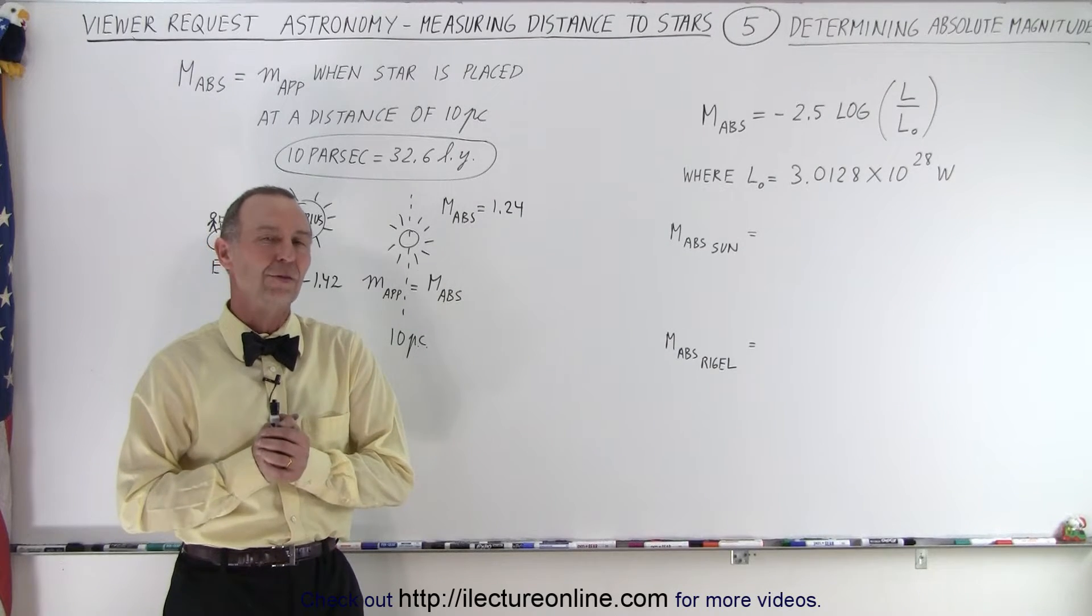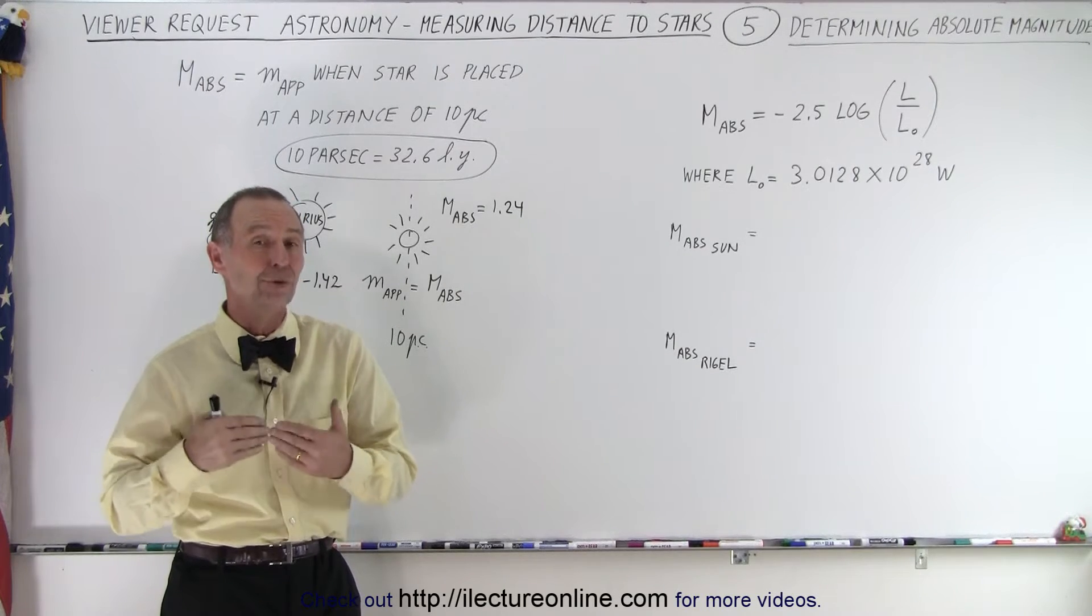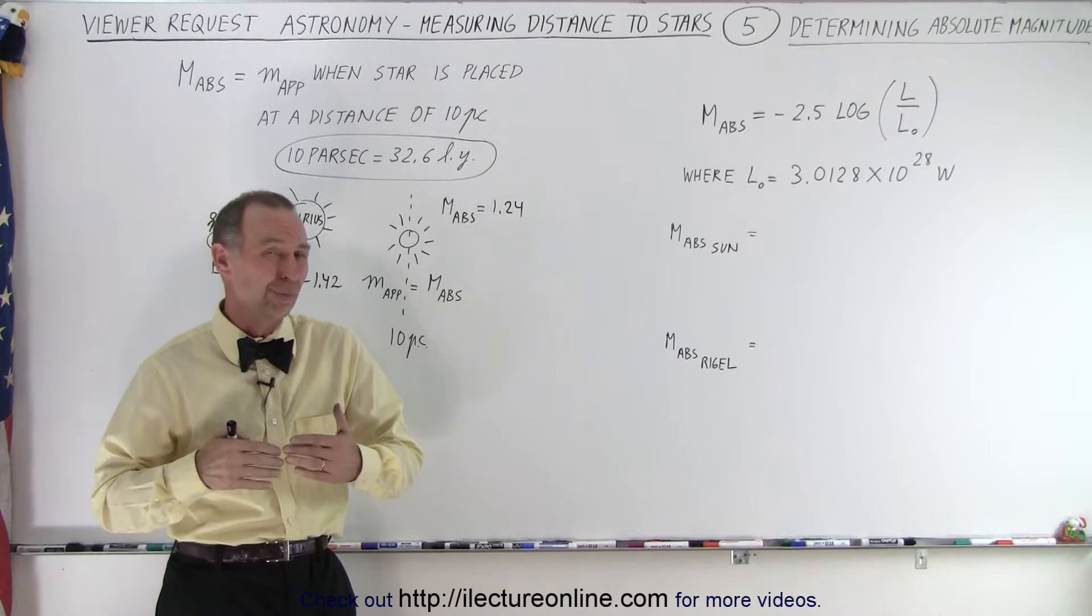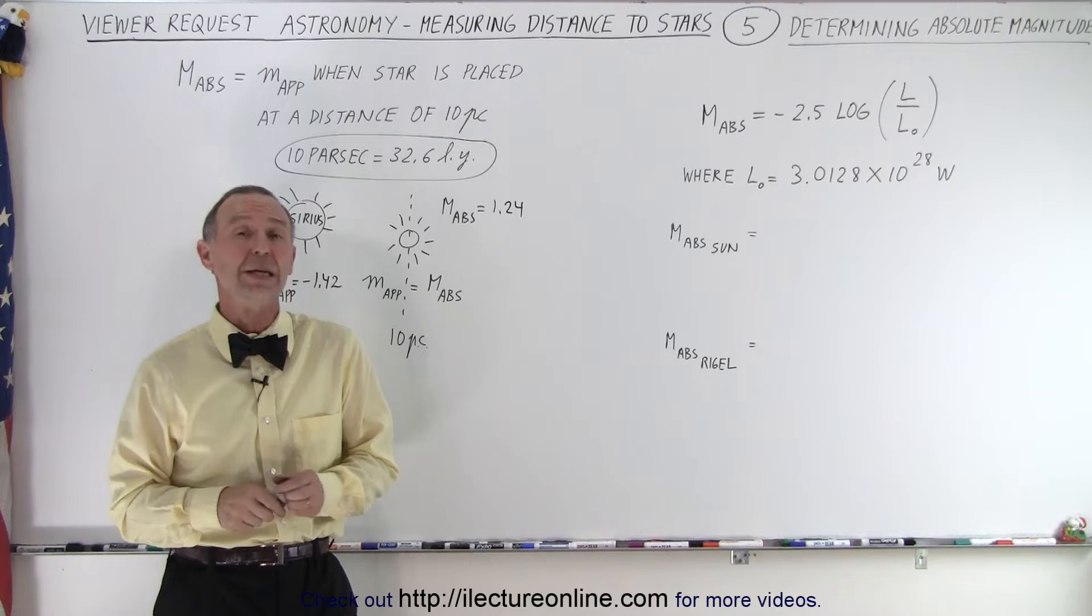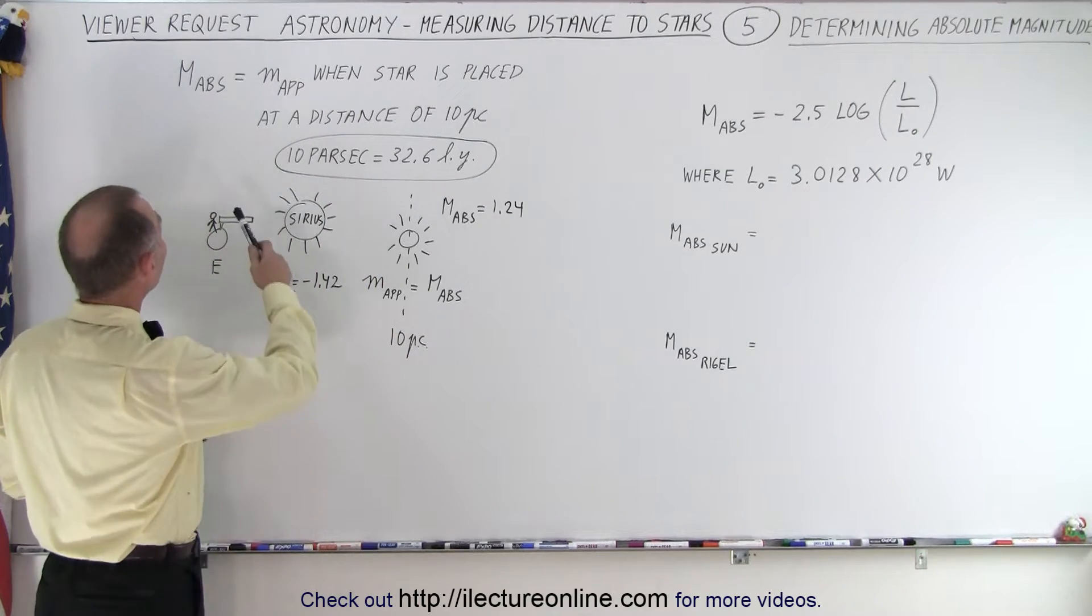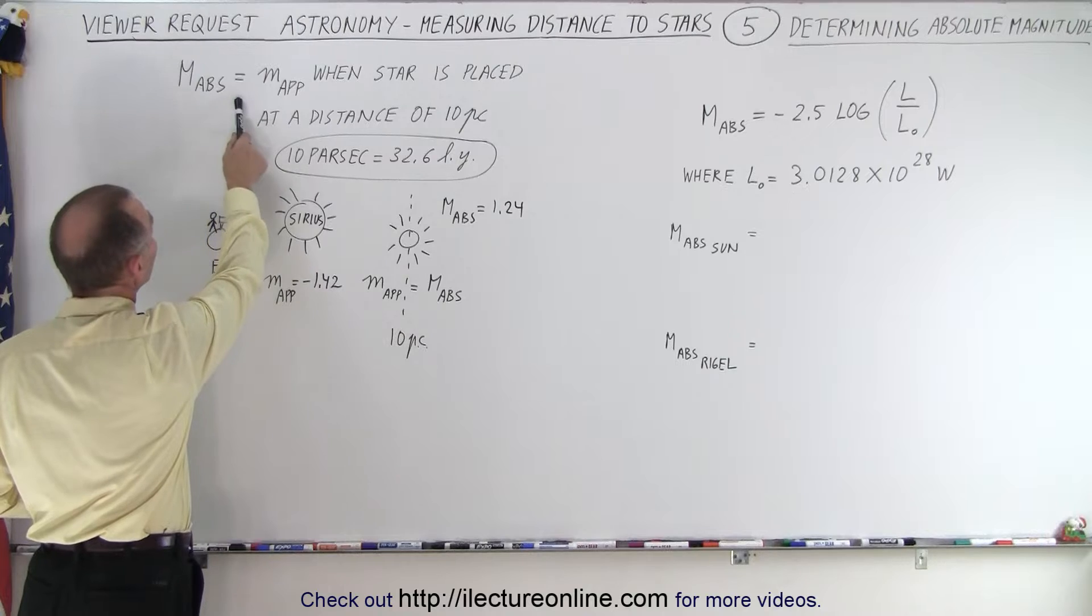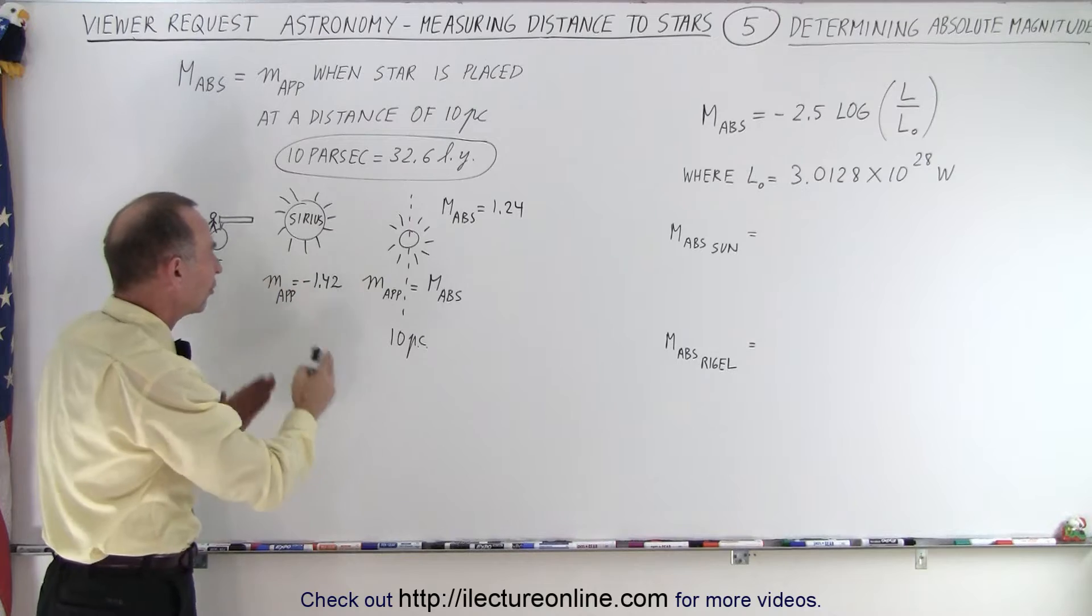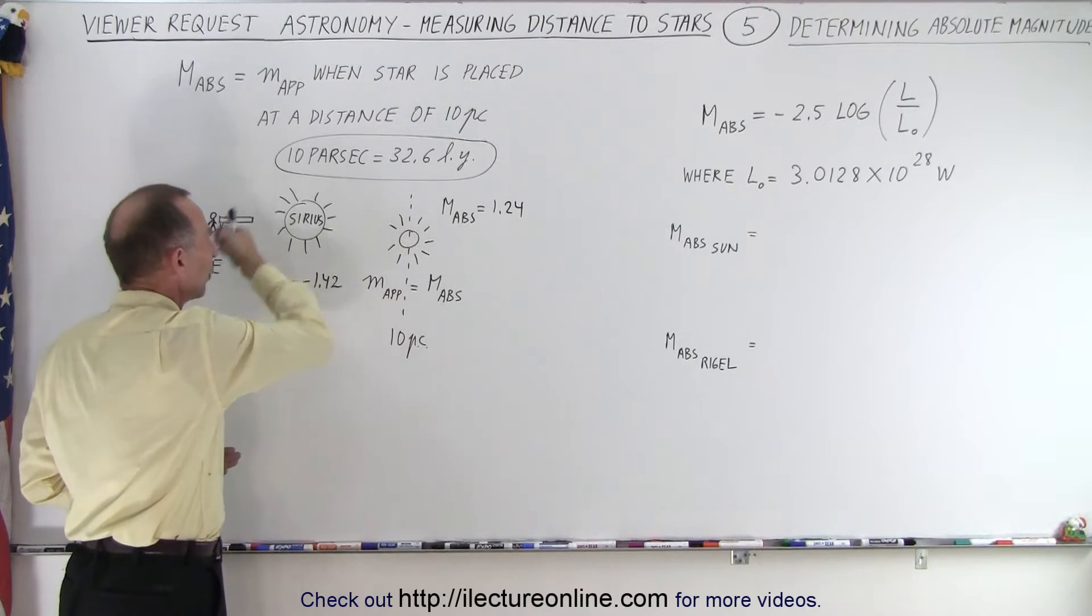Welcome to our lecture online. So how do we determine the absolute magnitude of a star? And of course, we have to remember what an absolute magnitude actually means. So let's go to the left side of the board. Here it's defined: the absolute magnitude is equal to the apparent magnitude of a star when the star is placed at a particular distance away from the Earth.